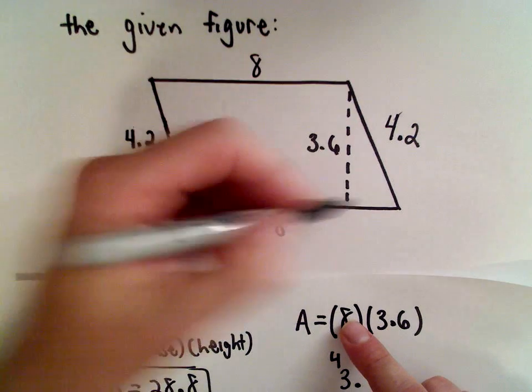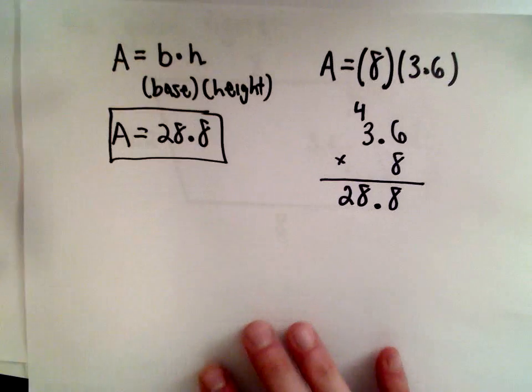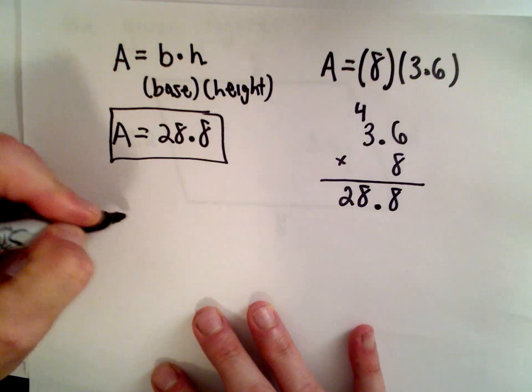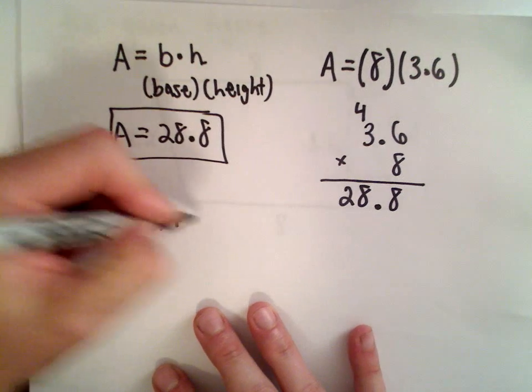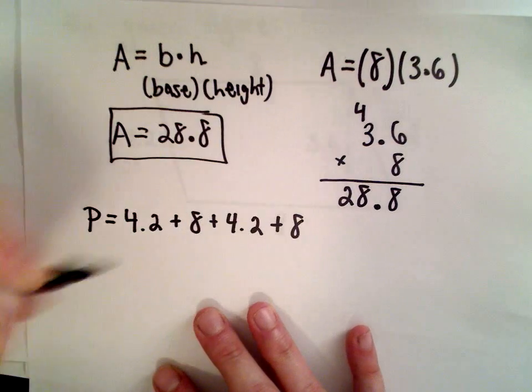So we just have to add up those values: 4.2 plus 8 plus 4.2 plus 8, and that's going to give us the perimeter.